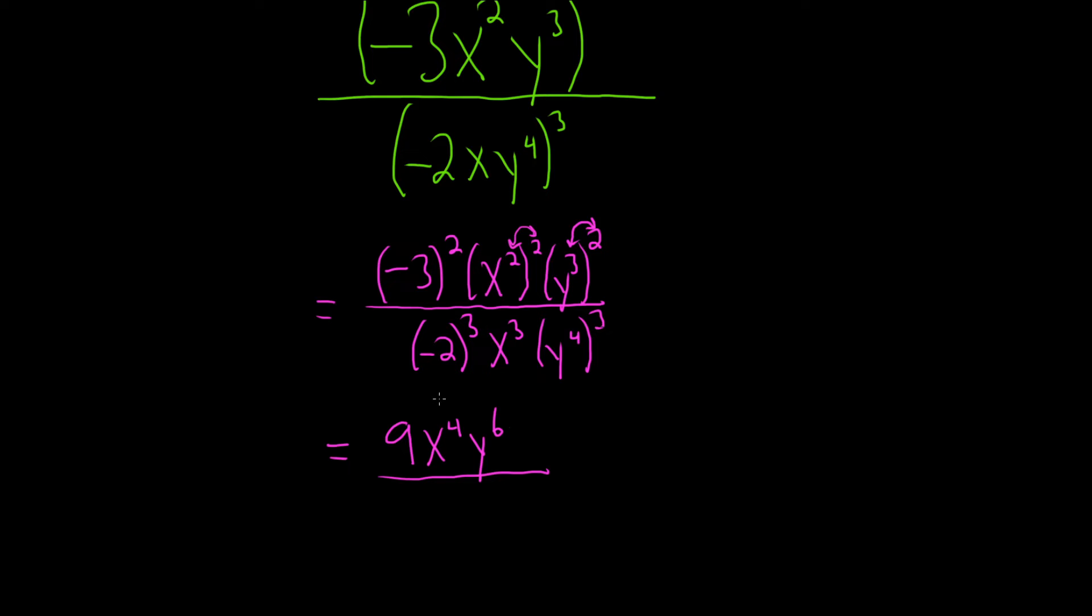when you cube a negative number it stays negative, so negative 2 cubed is going to give us negative 8, and here we have x cubed, and then here we multiply, 3 times 4 is 12, so we get y to the 12th.